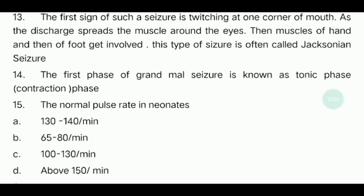Fifteenth question: The normal pulse rate in neonates. The options are 142, 130 to 140, 65 to 80 per minute, 100 to 130 per minute, or above 150 per minute. The answer is 130 to 140 per minute.